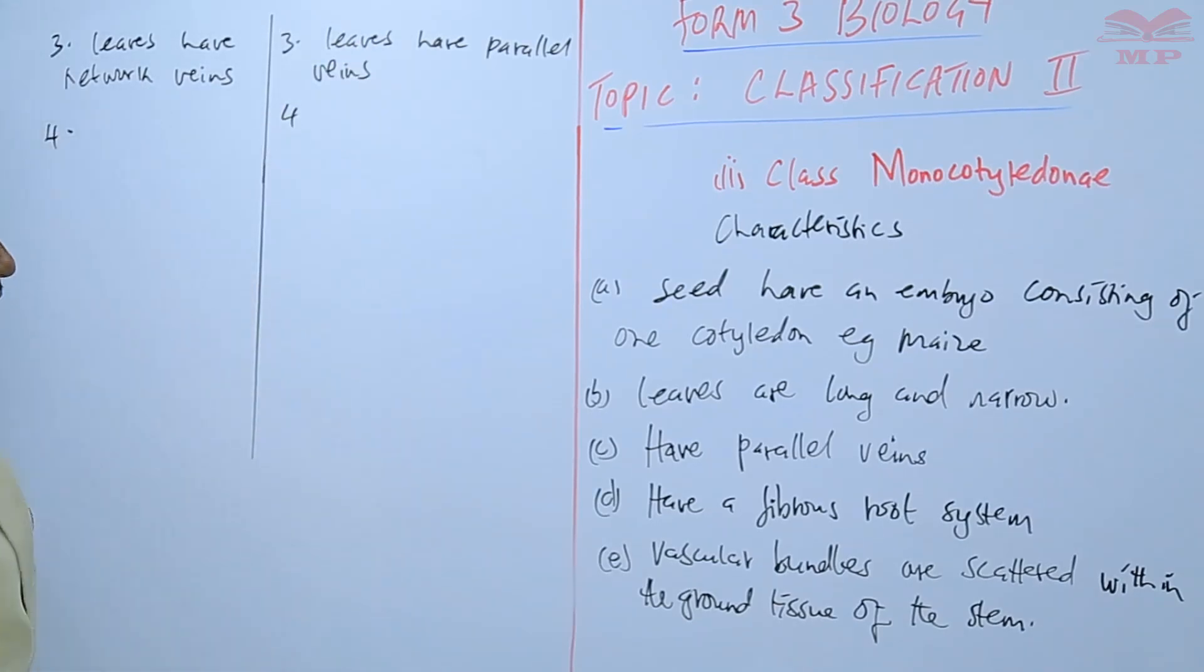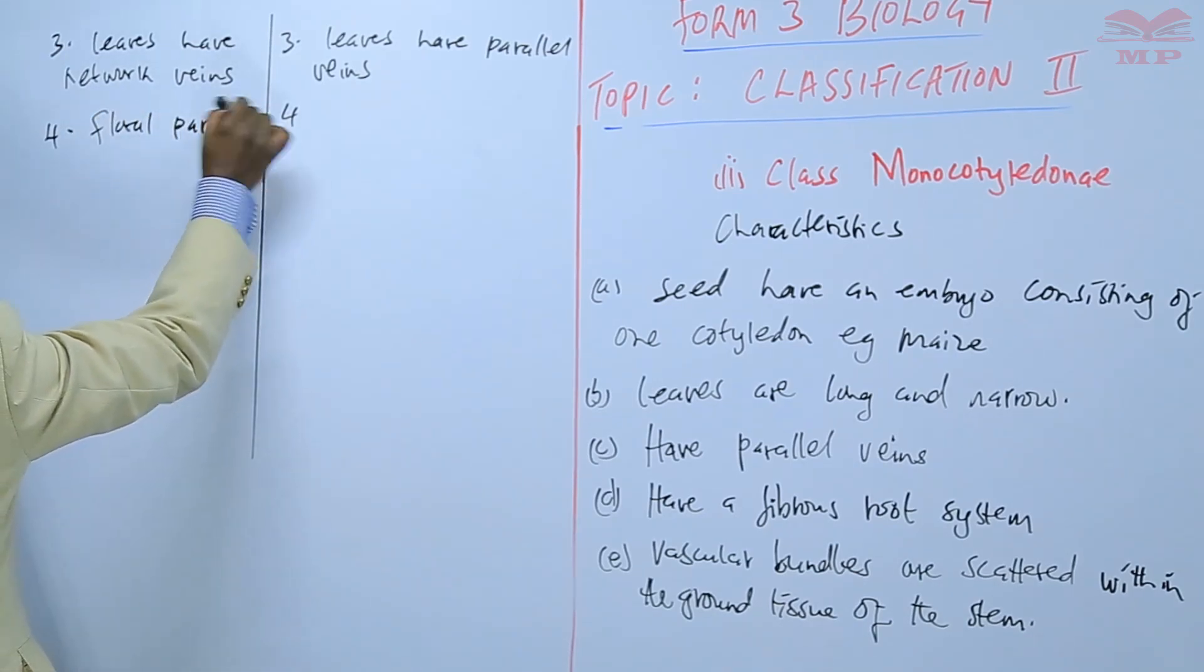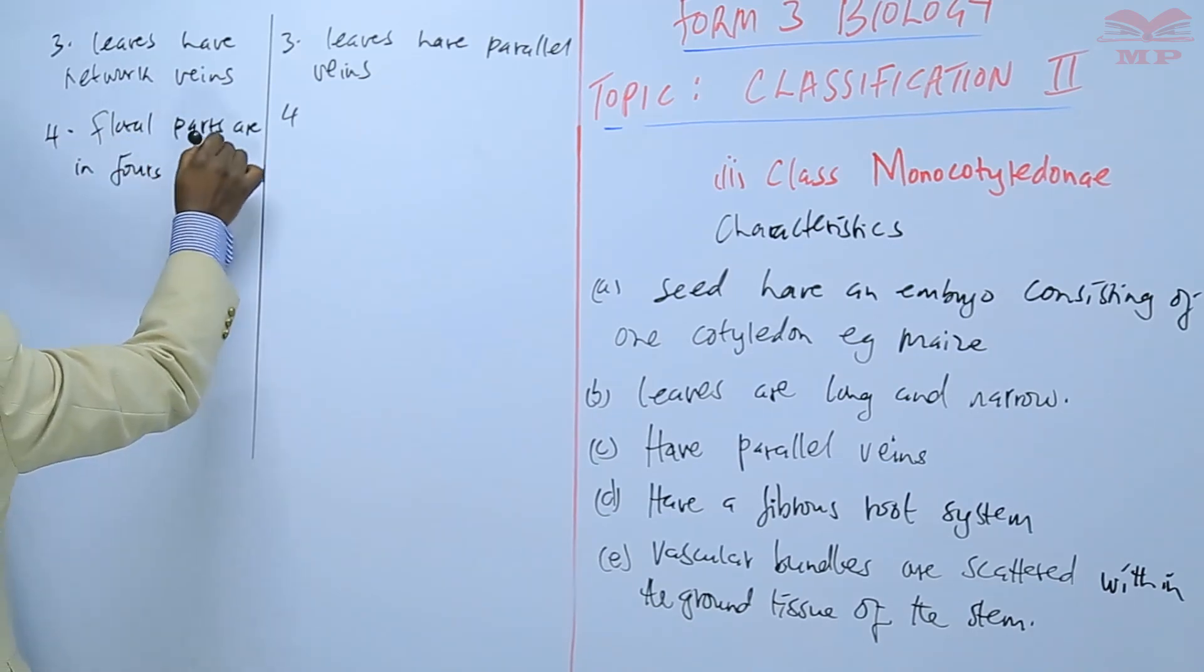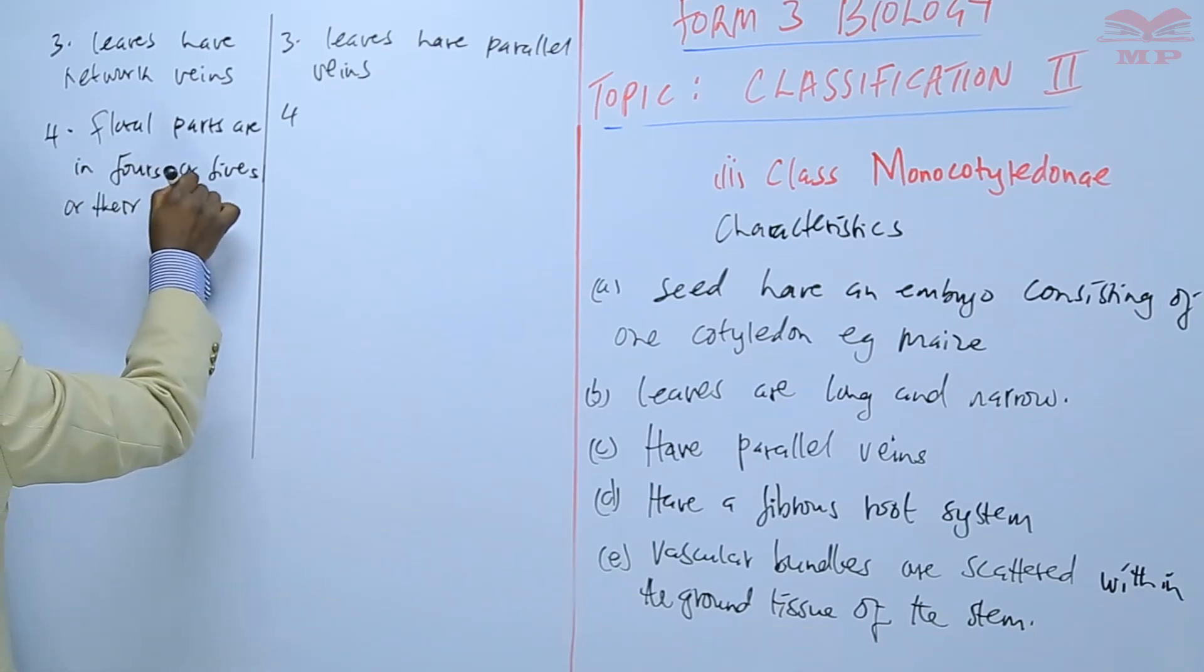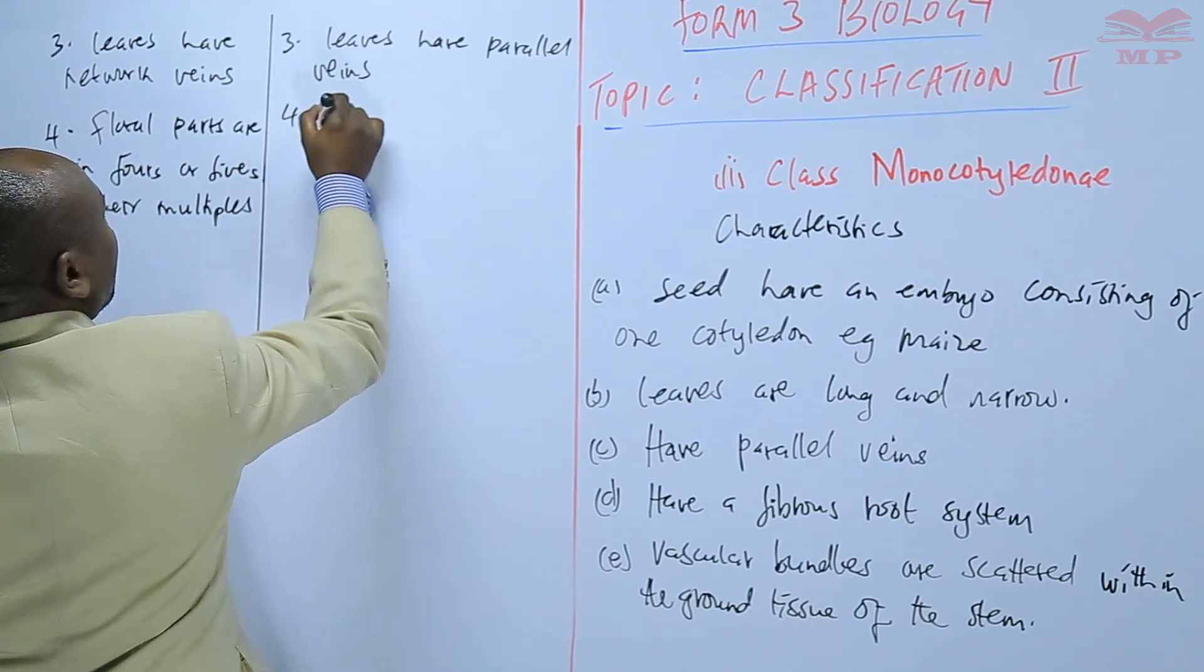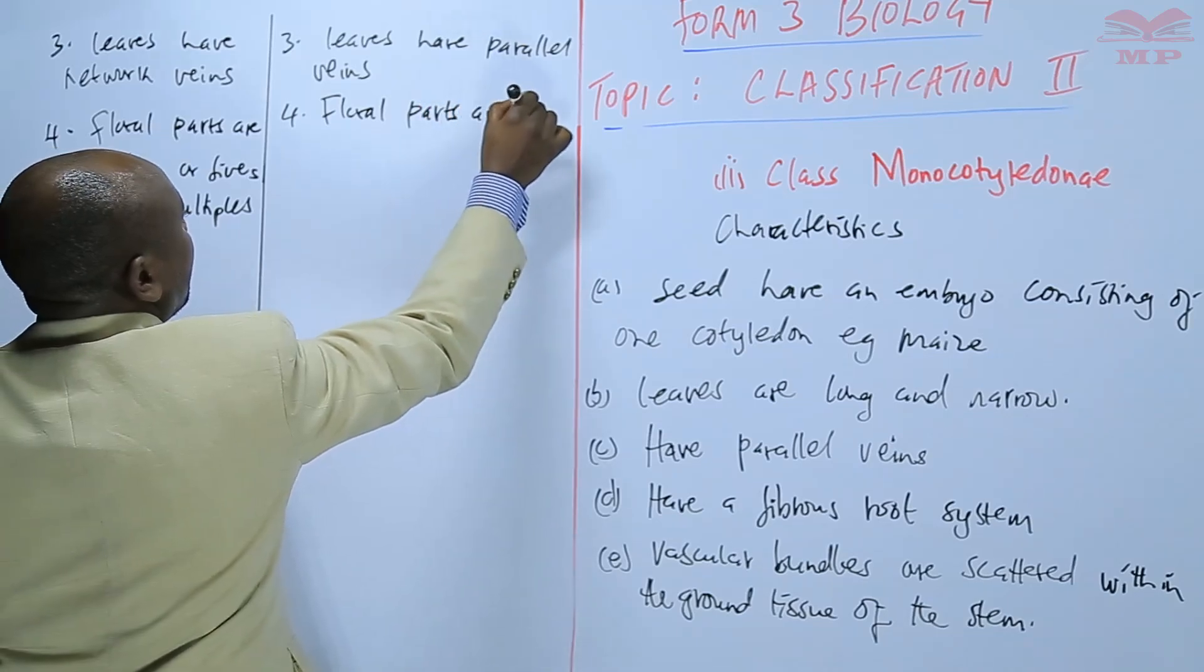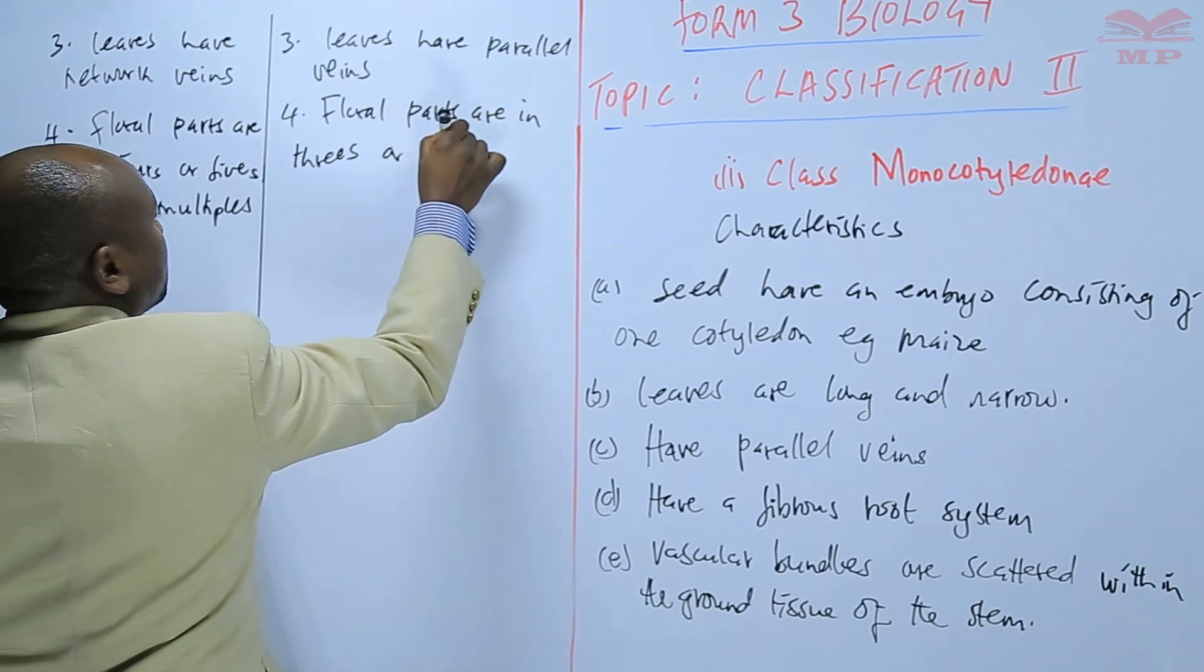In terms of the flowers, Dicotyledonae floral parts are in fours or fives, or they are multiples. But in the case of Monocotyledonae, the floral parts are in threes or they are multiples.